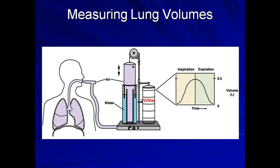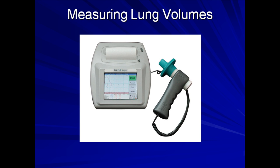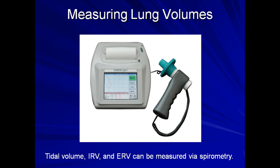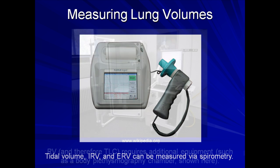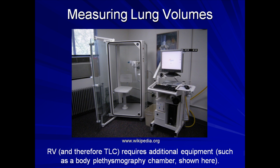Here is a more basic schematic of the principle on which Hutchinson's device worked — an example of a volumetric spirometer using a water bell to displace a recording device. Today, tanks of water and pulley systems have been replaced with circuits and a variety of techniques to measure air flow integrated over time. Standard spirometry is able to measure tidal volume, inspiratory reserve volume, and expiratory reserve volume, but not residual volume. Measuring residual volume, and thus total lung capacity, requires additional equipment such as a body plethysmography chamber. Due to the obvious practical challenges in employing such devices in the ICU, measurement of residual volume is essentially never done in mechanically ventilated patients.